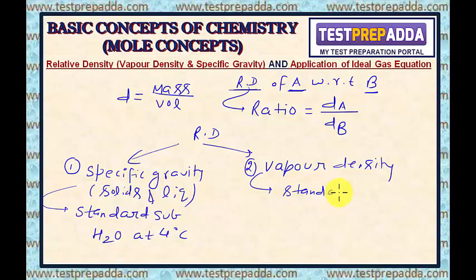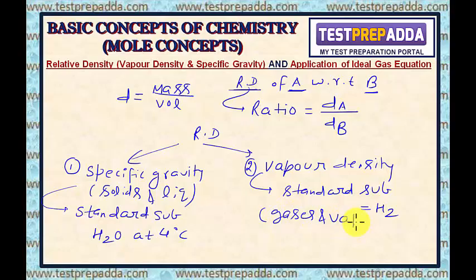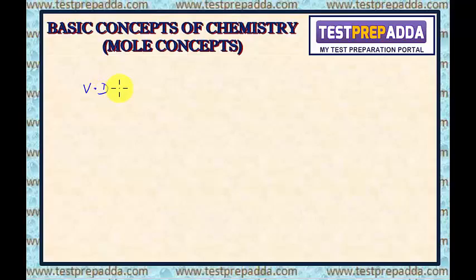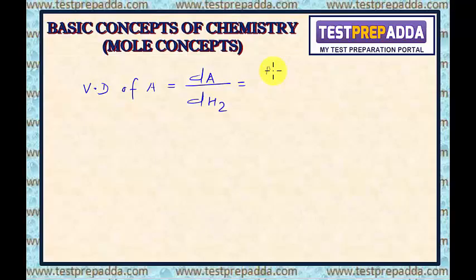The second type of relative density is vapor density. Here the standard substance is H₂ gas, and this relative density is for gases and vapors. So vapor density of substance A equals the density of substance A upon the density of H₂, and since density is mass upon volume, this becomes mass of substance A upon volume of A, divided by mass of H₂ gas upon volume of H₂ gas.